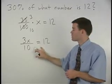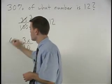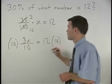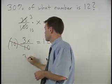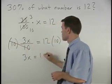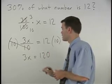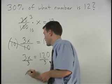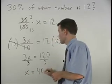To get rid of the fraction, we multiply both sides of the equation by 10. And we have 3x equals 120. Dividing both sides by 3, x equals 40.